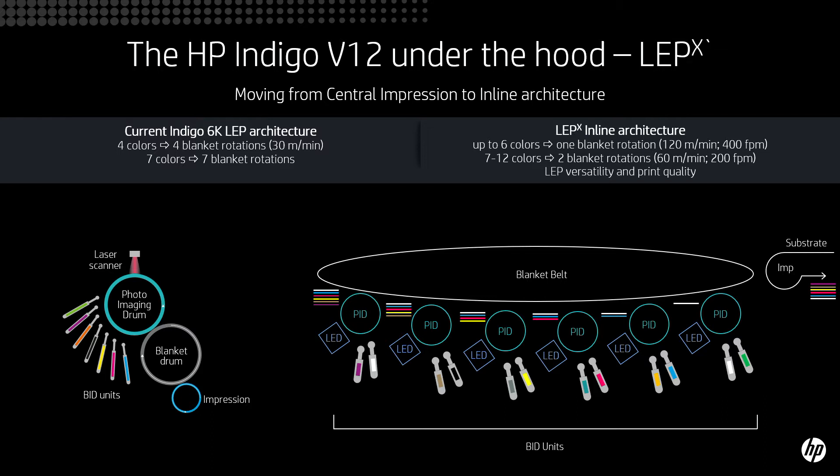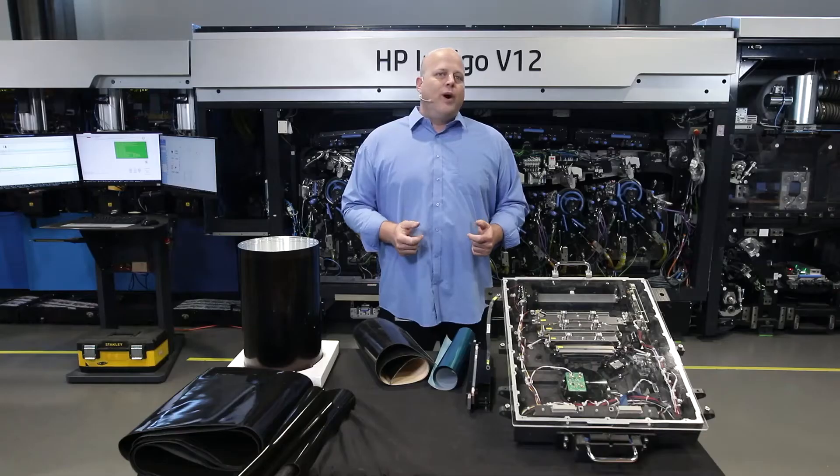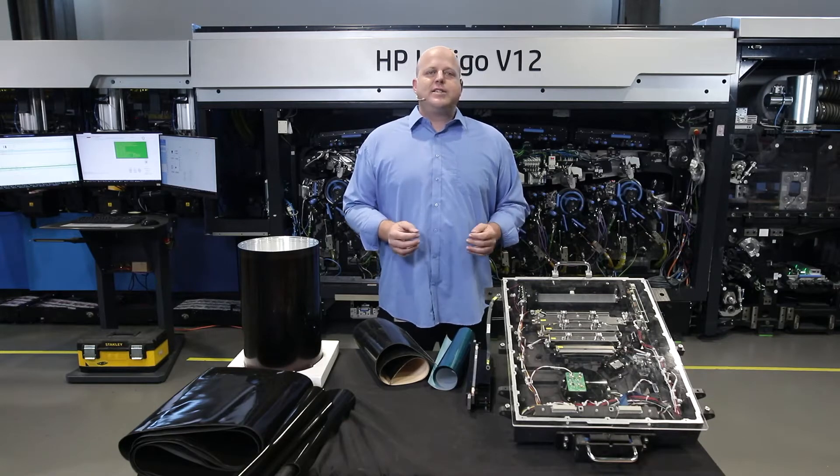The LEP and the LPX will have the same substrate versatility and application versatility, and the V12 with the LPX will offer superior print quality since we introduced a new writing head with 1600 dpi native resolution. Now why do you need 12 colors? This is for two main reasons.